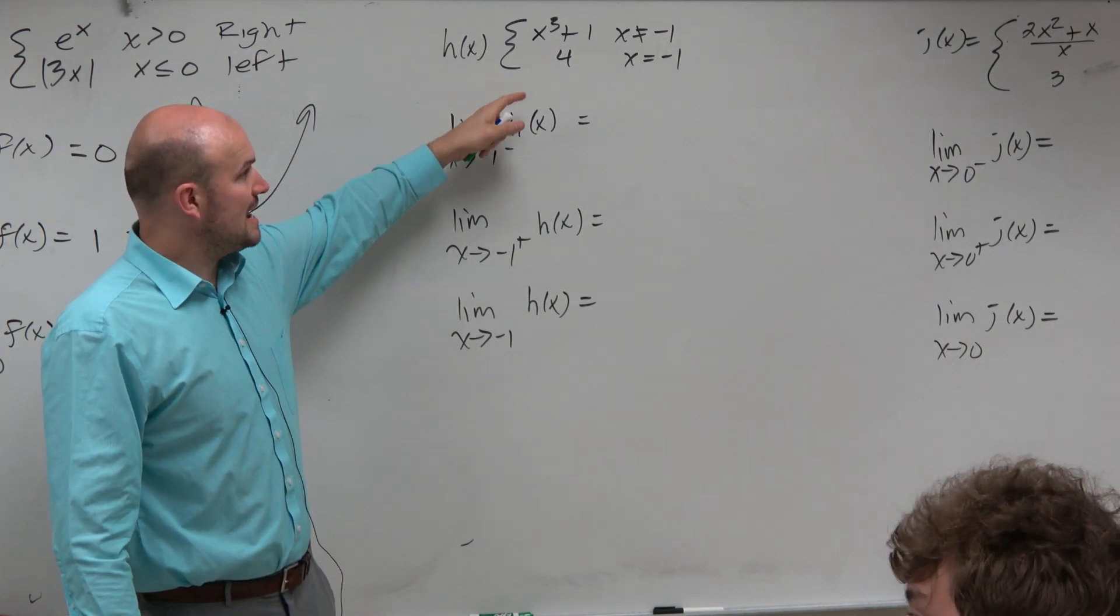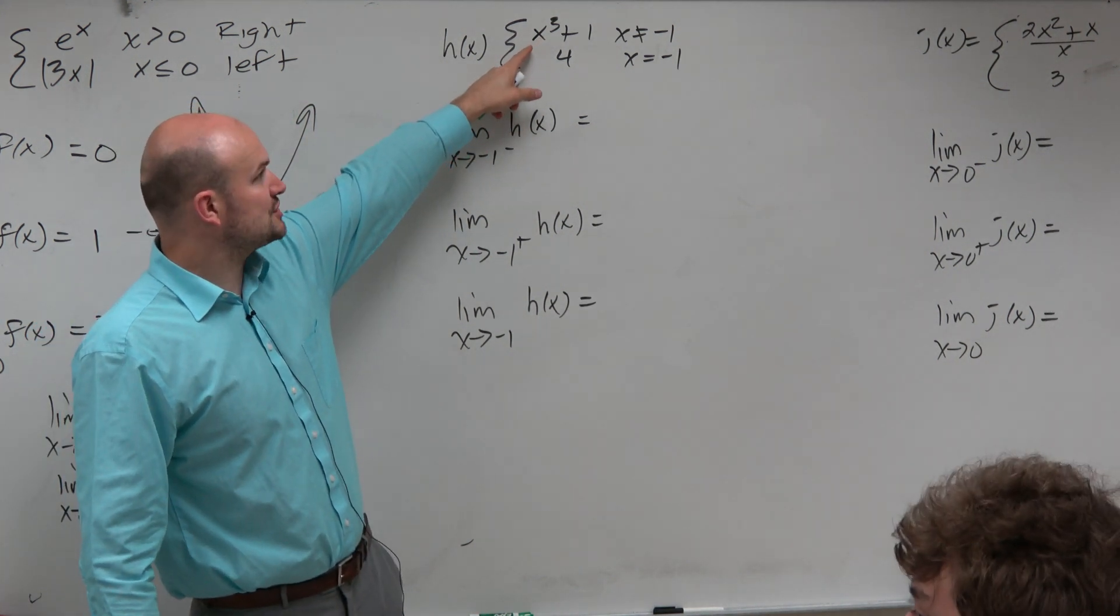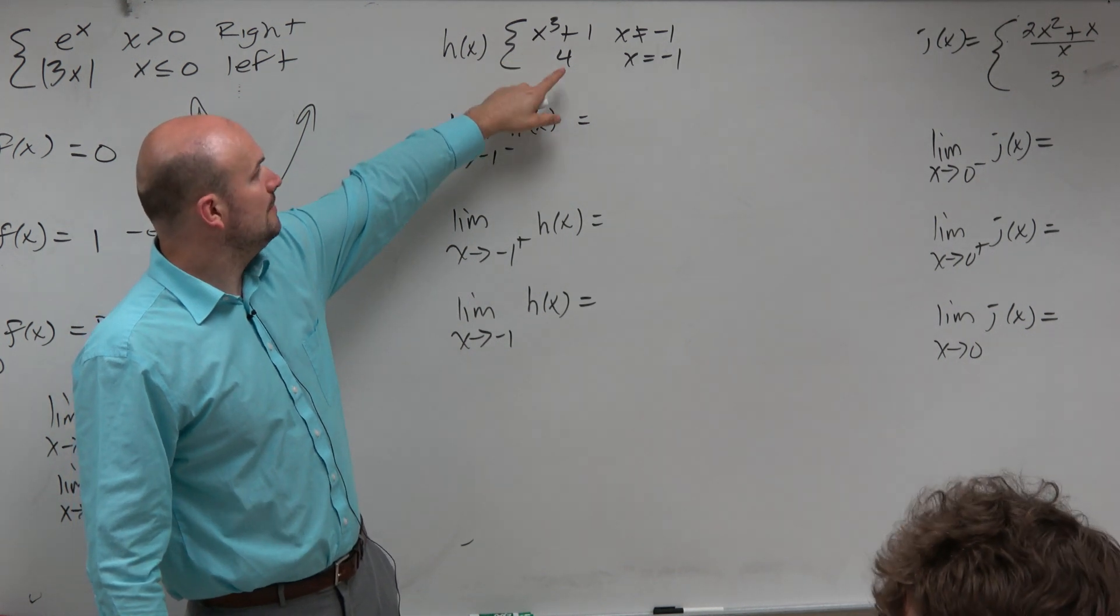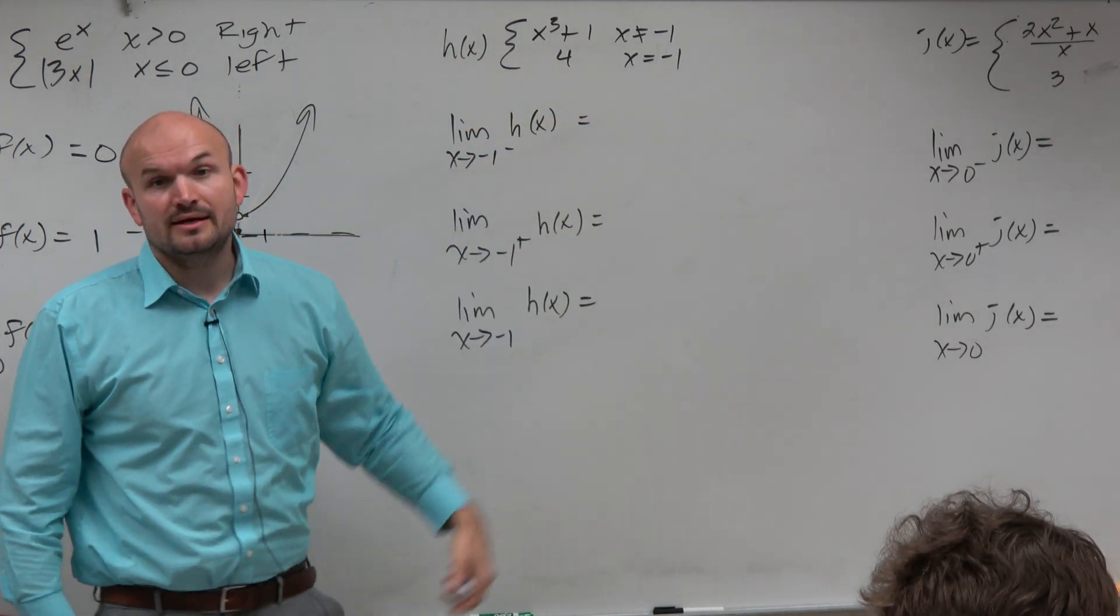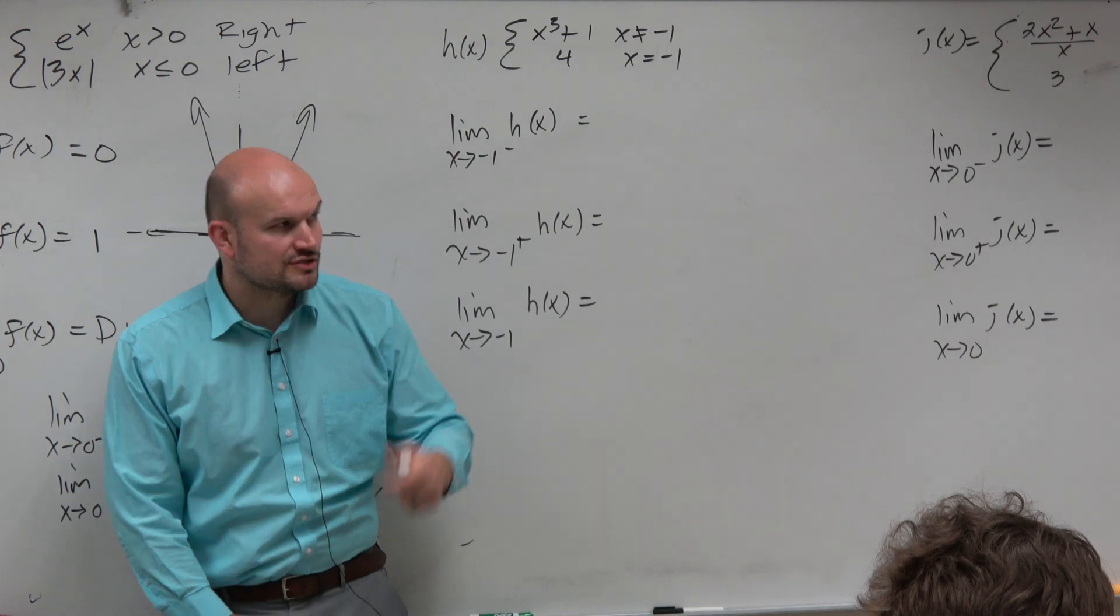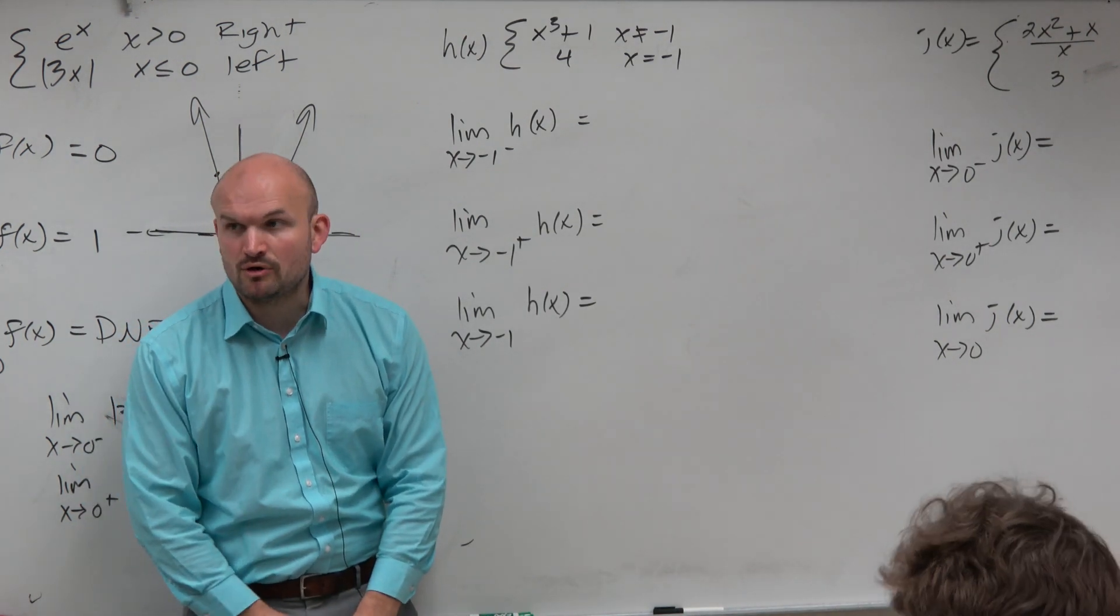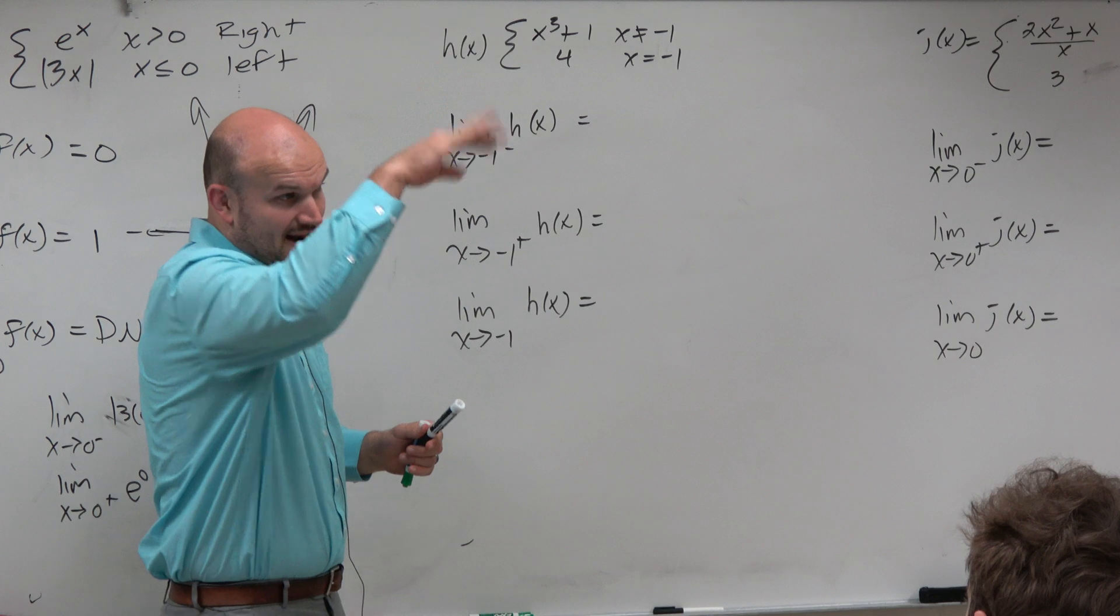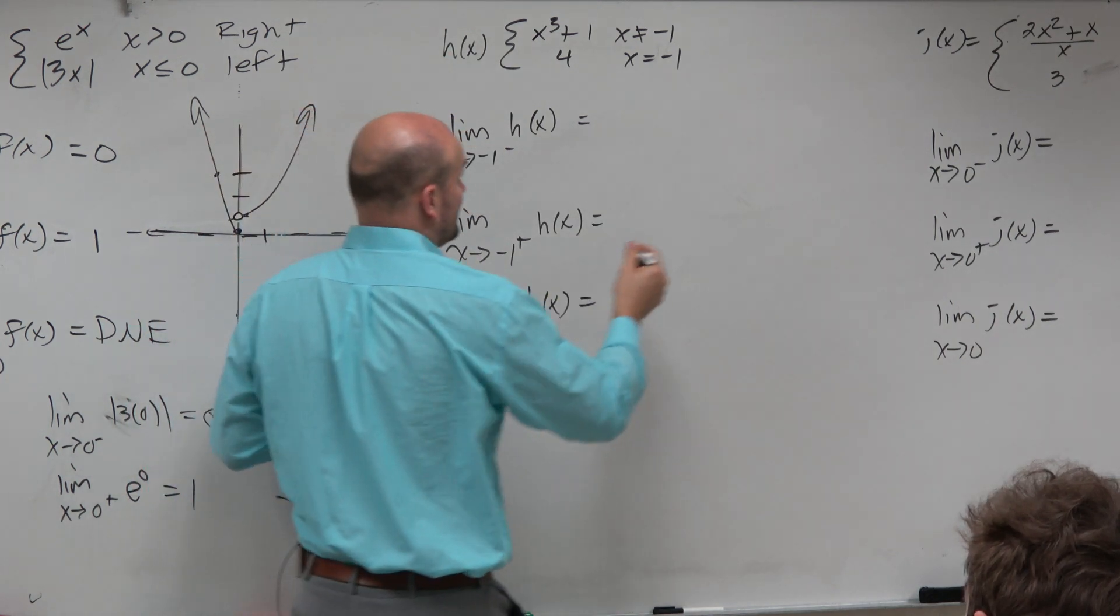So what's happening is it's true for this function, x cubed plus 1 for all real numbers, but it's not true at negative 1. Now, again, you should know what this graph looks like without even having to power up your calculator. This is the cubic function, which is that S curve, and then being shifted up 1.